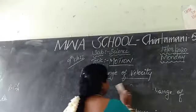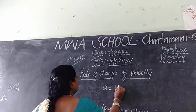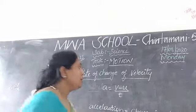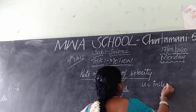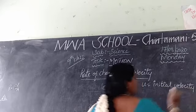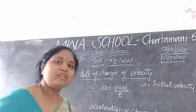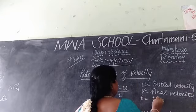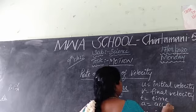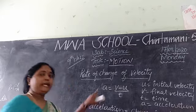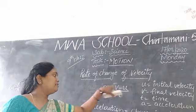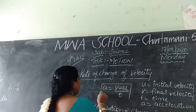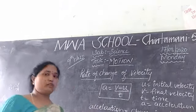Let's write the symbolic representation of acceleration. A is equal to V minus U by T. Here, U is the initial velocity — that is the starting velocity. V is the final velocity. T is time. And A is acceleration. So A equals V minus U by T is the formula for acceleration.